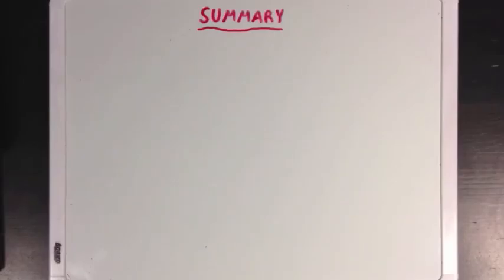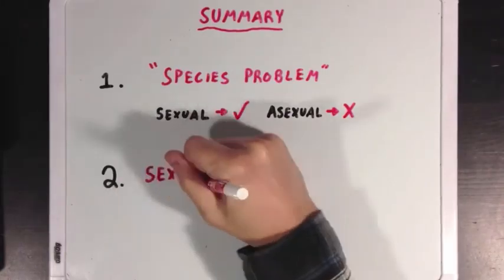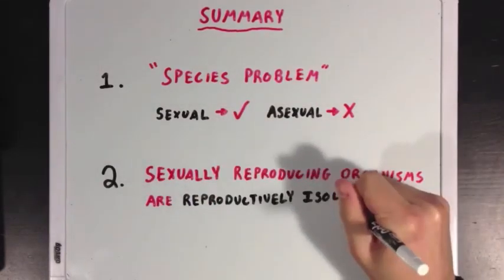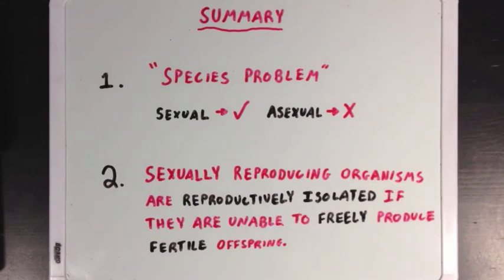What did we learn? First we learned about the species problem and how classifying different organisms into different species can be quite difficult. We have a pretty good definition for sexually reproducing organisms, but not really for asexually reproducing organisms. And next we learned about reproductive isolation and how we can say that two sexually reproducing organisms are reproductively isolated if they are unable to freely produce fertile offspring together.